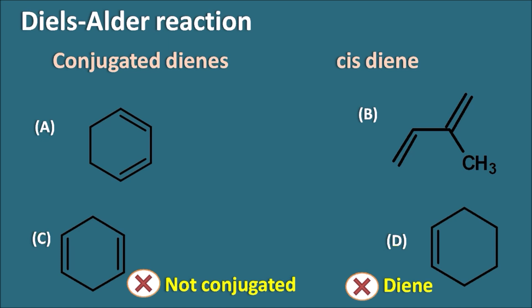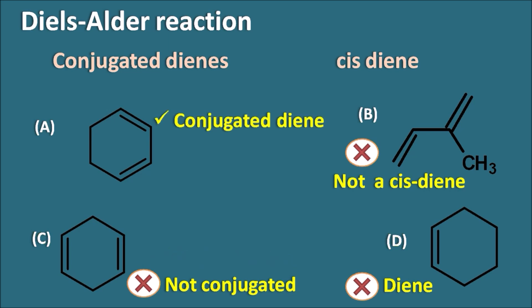Option B has a conjugated diene, but this diene has a trans configuration — it is not a cis diene. Trans dienes cannot undergo the Diels-Alder reaction readily. So the right answer is option A, which is both a conjugated diene and a cis diene.